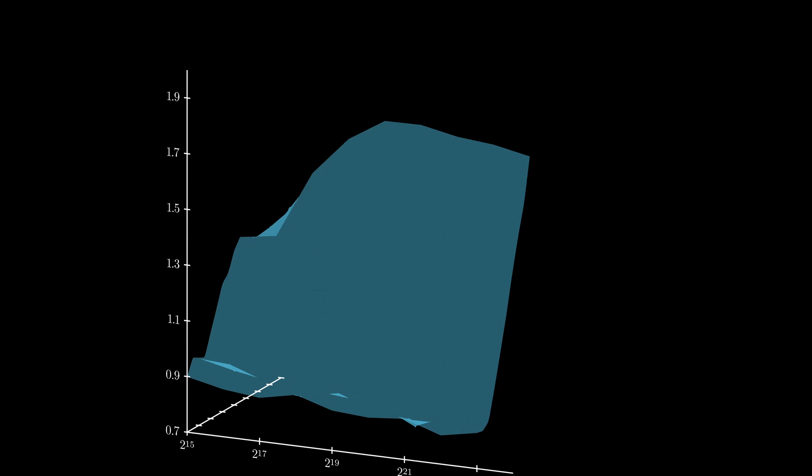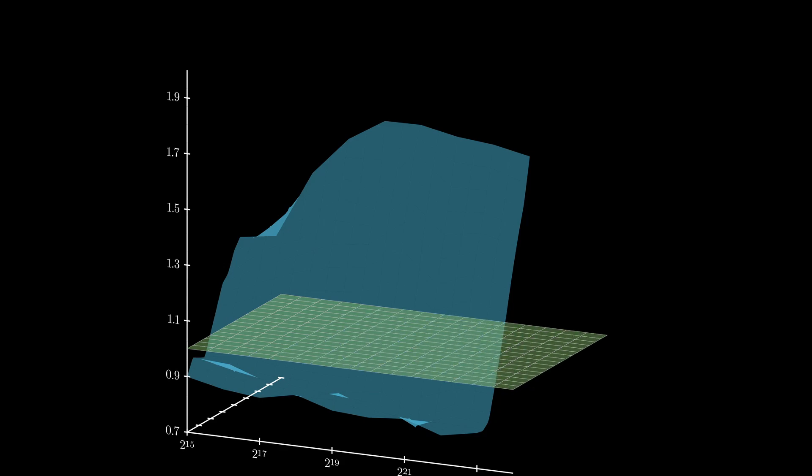Now we can add another dimension to our graph that represents the amount of accesses per warp, with the green surface showing a 1 to 1 ratio of constant memory speed to global memory speed.